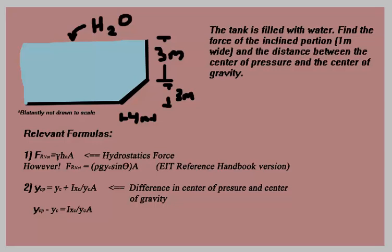they give it to you as F subscript R net with the P knots, which I have not shown here. This force is the same thing. It equals rho G times Y sub C times sine theta times A. Rho is the density, G is gravity. Rho times G equals the gamma shown in the first line. So that's the equivalent.